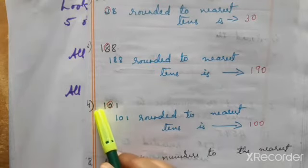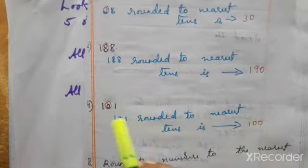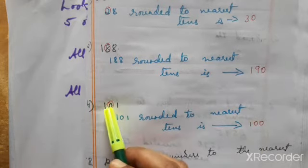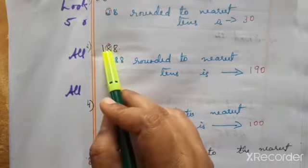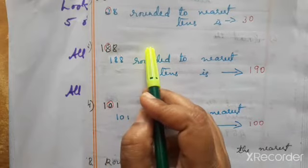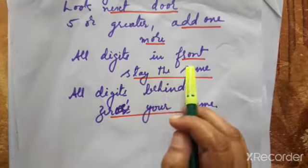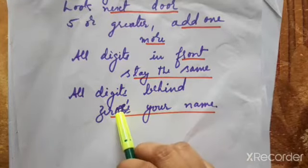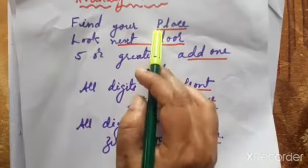All digits in front stay the same — the digits before the rounded place remain unchanged, no need to modify them. Once door knocked, the digits after the rounded place will become zero. Any other digit after that place will also become zero.